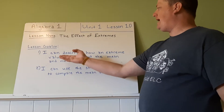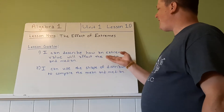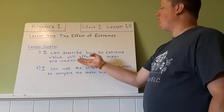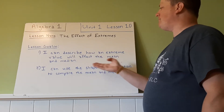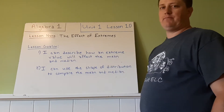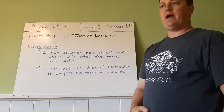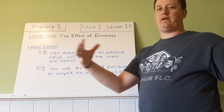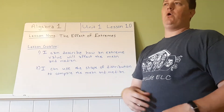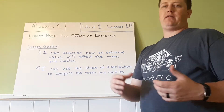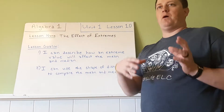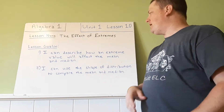Our learning goals. I can describe how an extreme value will affect the mean and median. So, if you have a number way away from the rest of the data, will it make that mean or median bigger, smaller, and by how much?